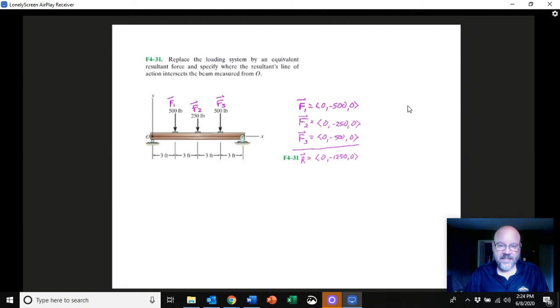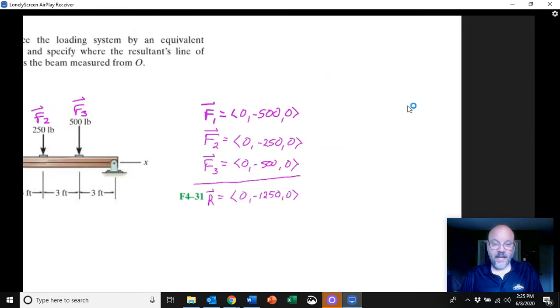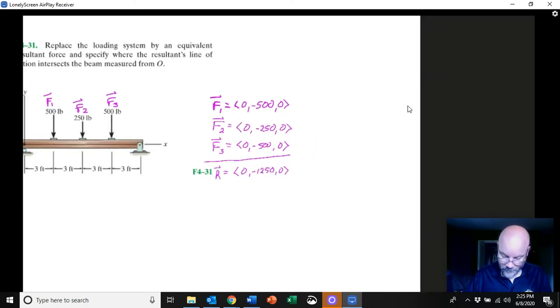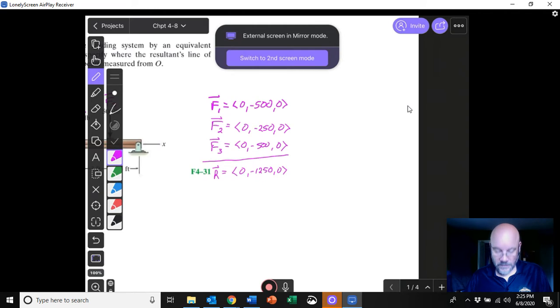So in this particular case, number 31, we've got a beam and there's three forces acting on it, and I've already broken it down into what those forces are and what the resultant of that is going to be. So let's go ahead and figure out the moment for each force. Let me see if I can switch my screen a little bit there.